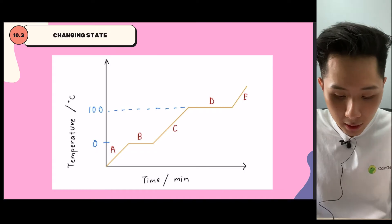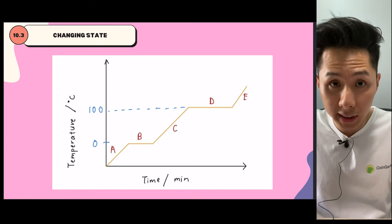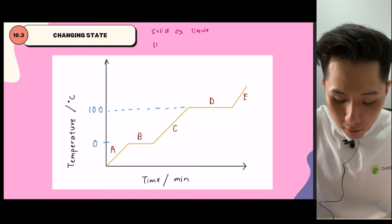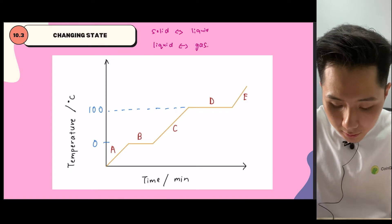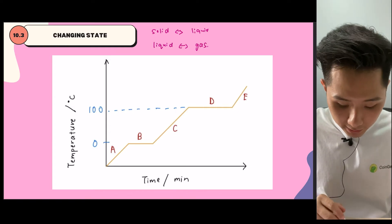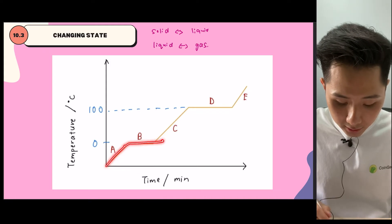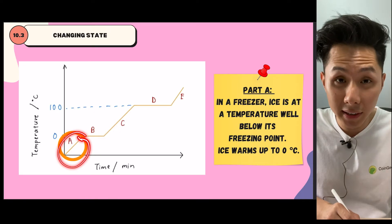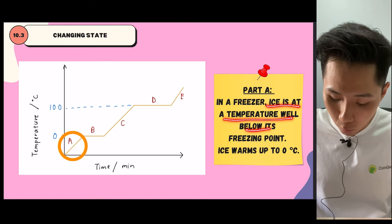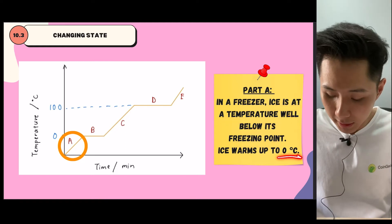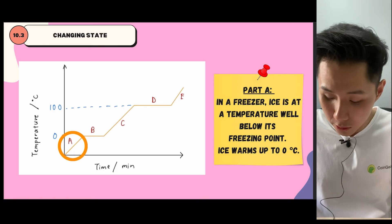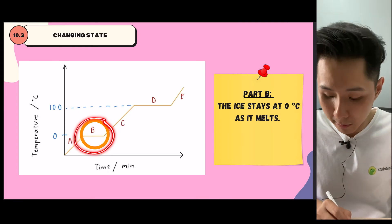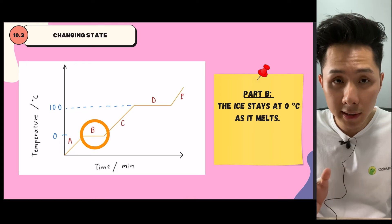Now we're going to look into another topic called changing states — for example, from solid to liquid or vice versa, or from liquid to gas and vice versa. This graph shows the temperature of a certain object as it is being heated. In part A, that's what happens to ice in a freezer — the temperature is well below its freezing point, less than zero degrees Celsius. If we turn off the electricity for the fridge, the ice will start heating up, but the temperature will still be less than zero until it reaches zero degrees Celsius.